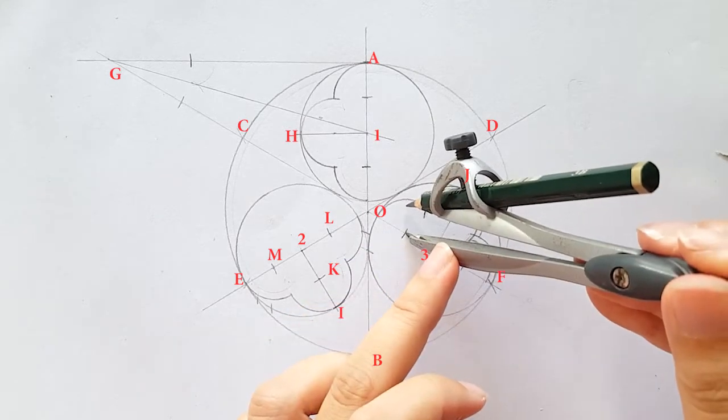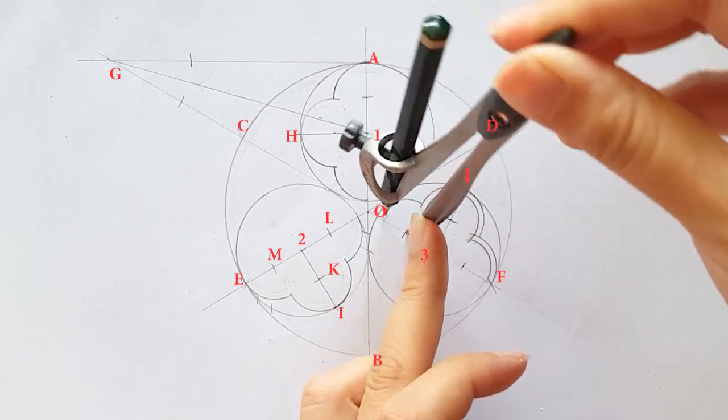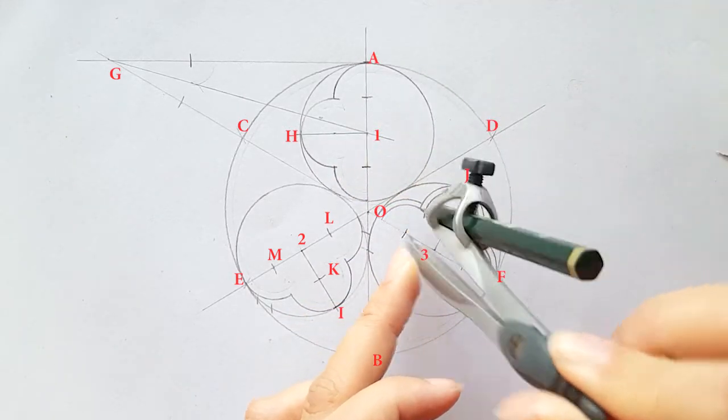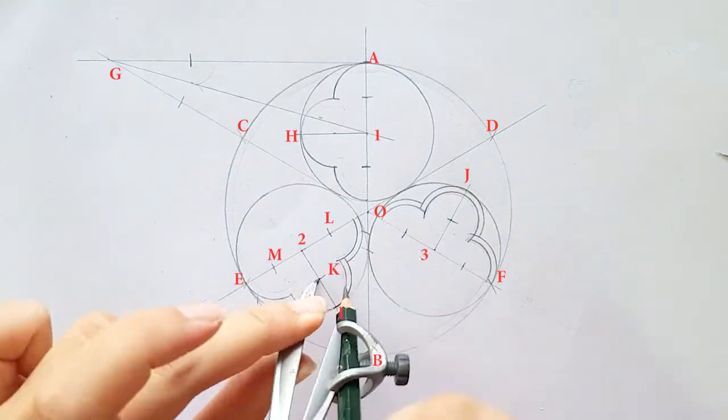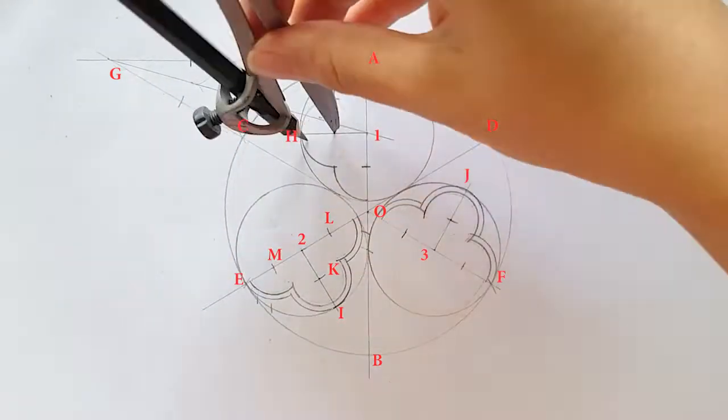Then, place your compass on these two points to draw a quarter arc. Make sure these lines are joined together to form a path. And then, repeat these steps on the other inscribed circle.